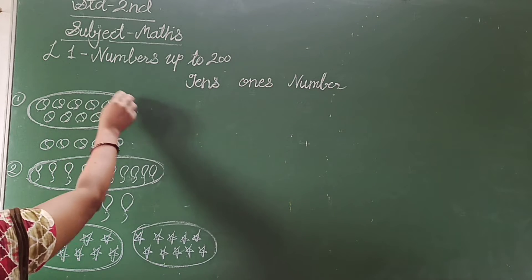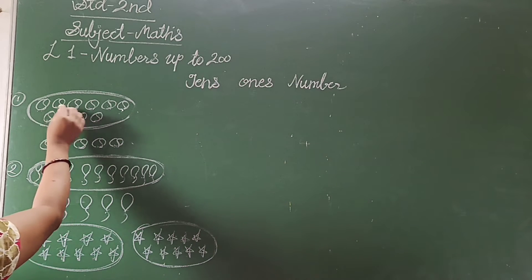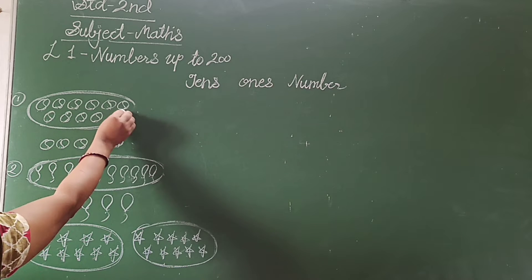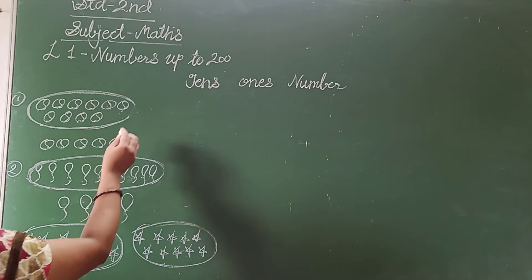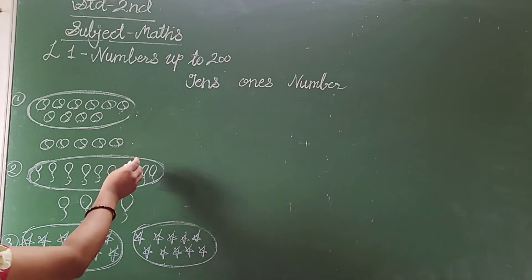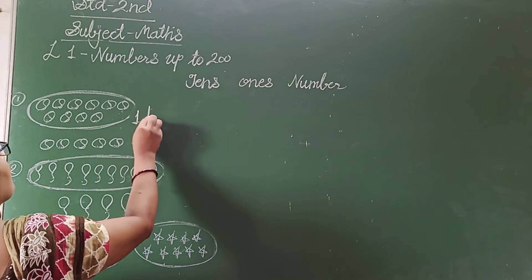Here I have 10 balls. Count it 1, 2, 3, 4, 5, 6, 7, 8, 9, 10. That means I have 1 bundle of 10s. Means 1 10s.